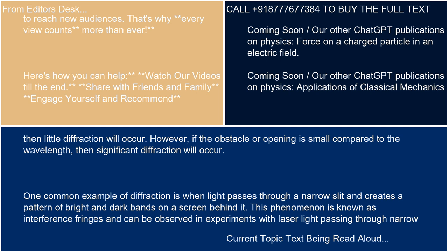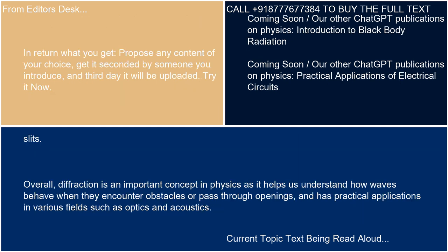One common example of diffraction is when light passes through a narrow slit and creates a pattern of bright and dark bands on a screen behind it. This phenomenon is known as interference fringes and can be observed in experiments with laser light passing through narrow slits.